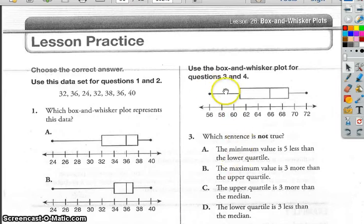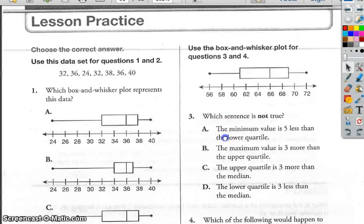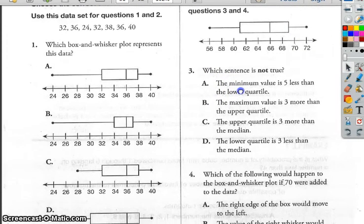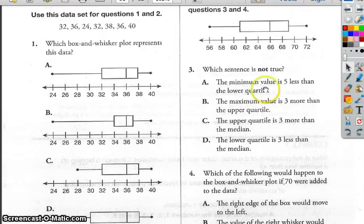Alright, so today we're looking at Lesson 26 Box and Whisker Plots from the Coach book. And Lesson 1, or Question 1, says use this data set for questions 1 and 2. Which Box and Whisker Plot represents this data?